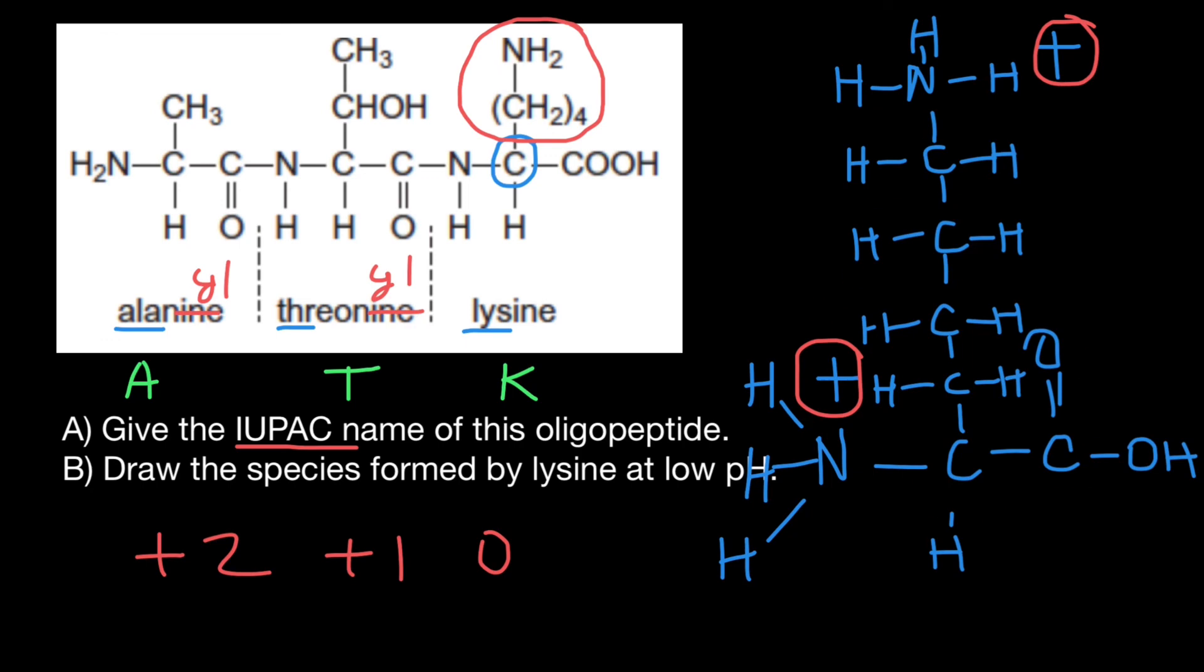And in strong base solution, the charge of this molecule would be minus one. In the strong base, we are going to have here NH2. So no positive charge here, NH2 here, no positive charge here. And we are going to lose this hydrogen here and would have negative charge here.